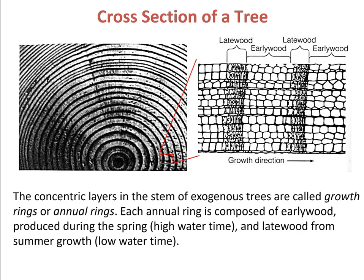The wood produced in one growing season constitutes a single growth ring. Each annual ring is composed of early wood, produced by rapid growth during the spring which is a high water time, and late wood from summer growth during the low water time. It's this pattern of early wood and late wood that makes the tree's growth rings very visible to us. Late wood consists of dense, dark, and thick-walled cells, producing a stronger structure than early wood.